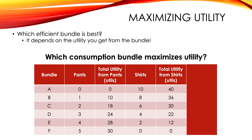So the question is still: which consumption bundle maximizes utility? In other words, which is going to make you the best off? You'd love a situation where you could buy five pairs of pants and 10 shirts — that would give you a total utility of 70 — but that's not affordable. Only these bundles are the affordable options for you right now, given the money you have and the prices of these things.